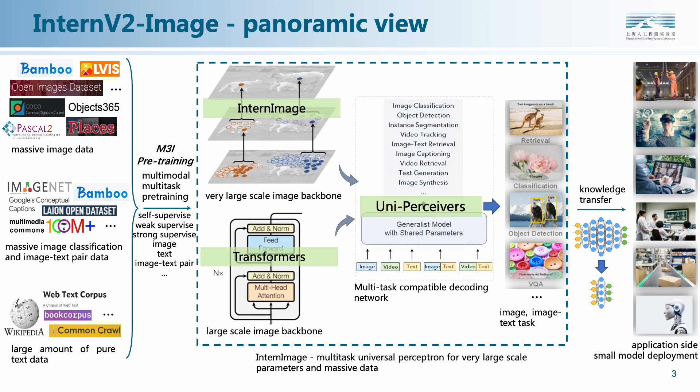This is a panoramic view of the InternV2 Foundation Model Project, which contains five main important parts. First, massive image-based data, including pure images, image-text pairs, etc. Second, a multimodal, multitask-compatible pre-training algorithm. Third, large-scale general image network, InternImage. Fourth, multitask universal decoding network, UniPerceiver. Finally, knowledge transfer solutions for downstream application.